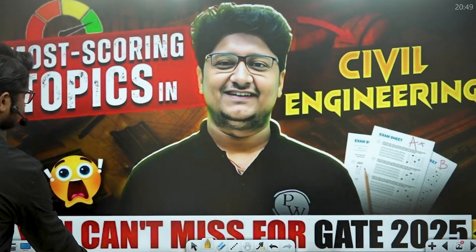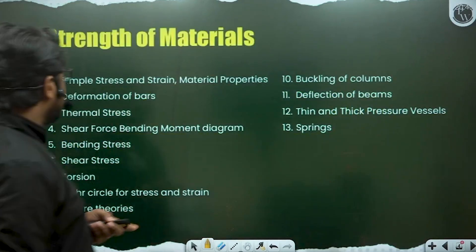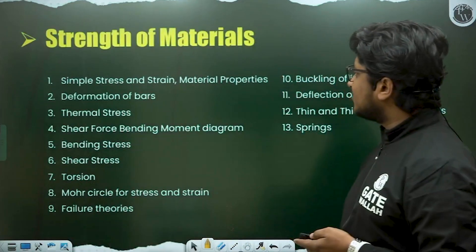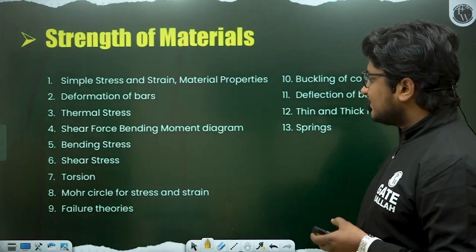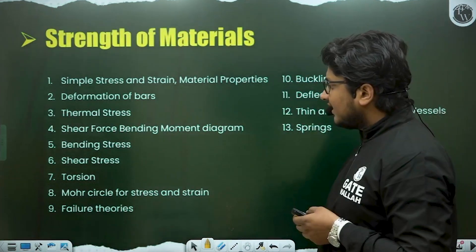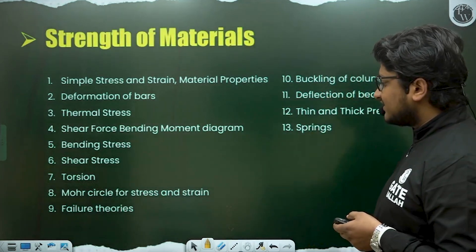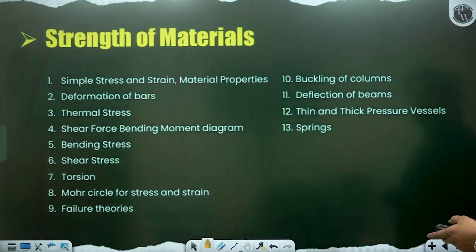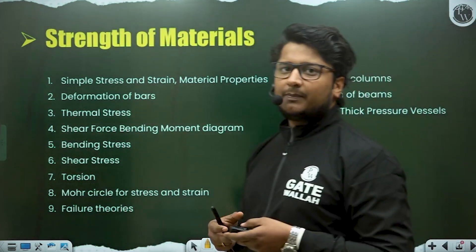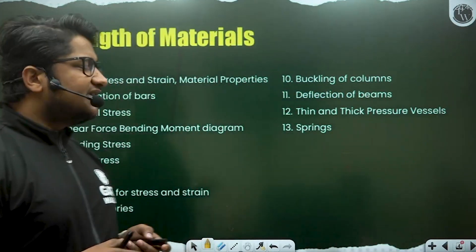The first subject is Strength of Materials. The important topics are: simple stress and strain, material properties, deformation of bars, thermal stress, shear force and bending moment diagrams, bending stress, shear stress, torsion, Mohr's circle for stress and strain, failure theories, buckling of columns, deflection of beams, thin and thick pressure vessels, and springs. These are important topics from which you can get questions in GATE 25, so revise and practice them carefully.